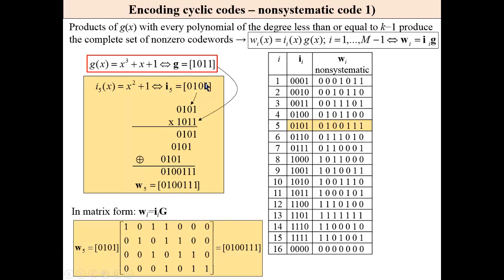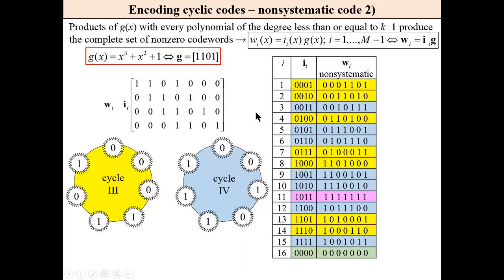The same can be done in matrix form. Having a generator polynomial, we may create the generator matrix, and code words can be found using that generator matrix from the standard formula. For cyclic code (7,4), there is another generator polynomial, and for this polynomial we have a generator matrix. We have the all-zero and all-one words, and then two cycles, each producing seven words — 16 words in total.